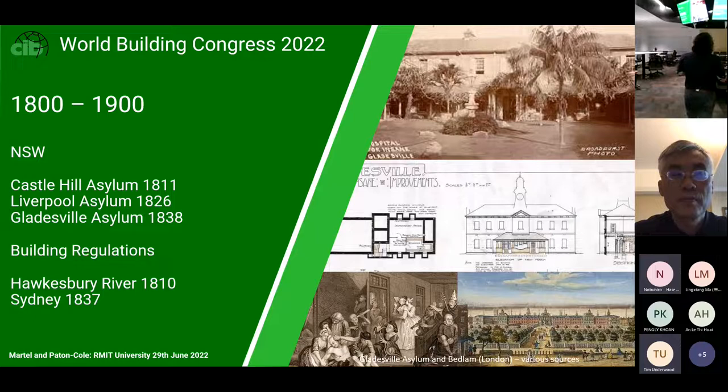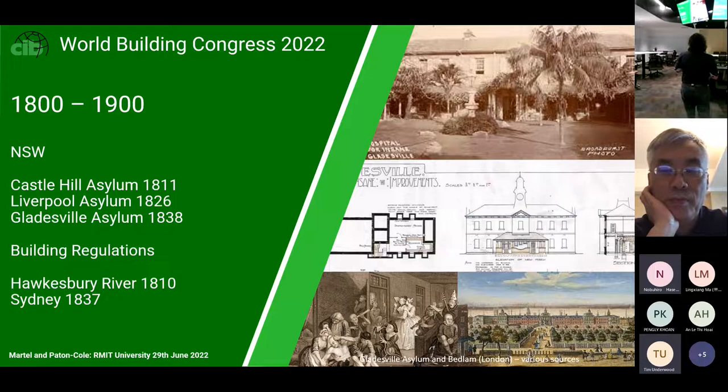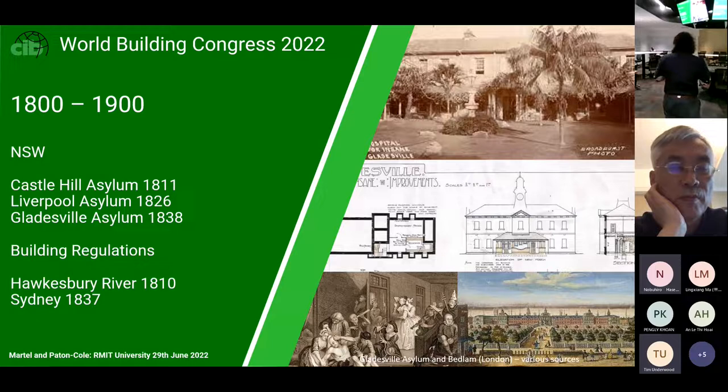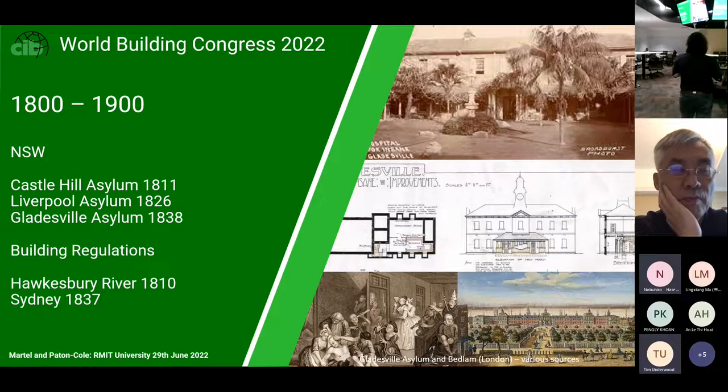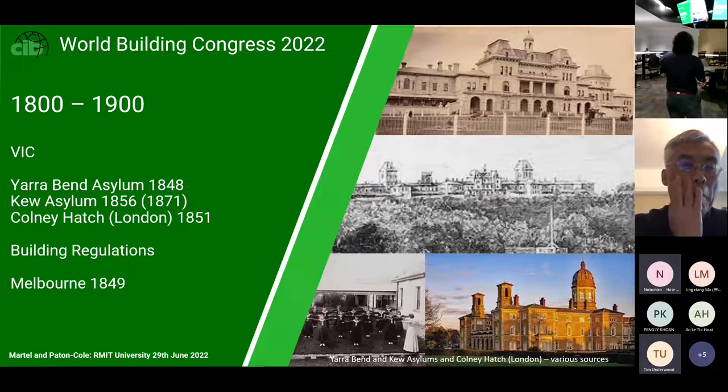Those early regulations were relatively localized around six or seven towns. Sydney proper got its first building regulations in 1837, which were largely a transplantation of the London Building Act originally of 1666 — after the Great Fire of London — then revisited by the English in 1774. So in 1837 we had building regulations and Gladesville in 1838, quite similar timeframes. Here in Victoria: Yarra Bend Asylum about two or three kilometres from here in 1848, and the Q Asylum starting in 1856, modelled on the 1851 Colney Hatch Asylum in London.